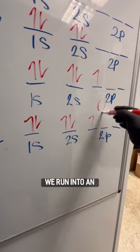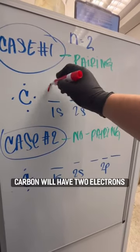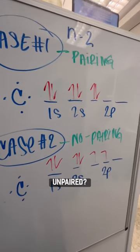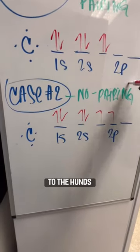But when we make it to carbon, we run into an issue. Carbon will have two electrons in its 2p subshell, but are they paired or unpaired? This is where we're introduced to Hund's rule.